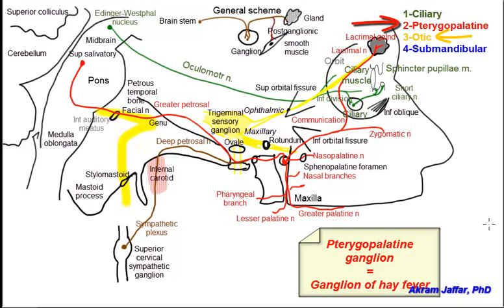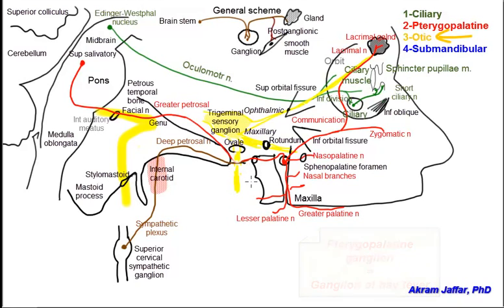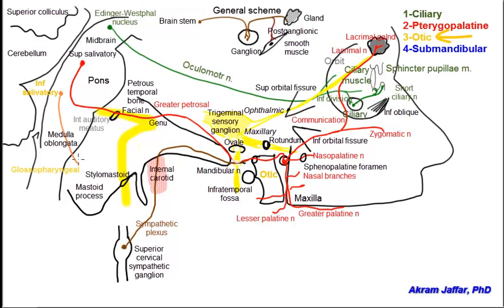The third ganglion is the otic ganglion, located in the infratemporal fossa medial to the mandibular nerve. It is a very small parasympathetic ganglion that lies between the mandibular nerve and the tensor palatini muscle. The preganglionic parasympathetic fibers which synapse in this ganglion originate in the inferior salivatory nucleus, located in the lower part of the pons. Fibers from the inferior salivatory nucleus leave the brainstem in the glossopharyngeal nerve, which exits the skull through the jugular foramen.